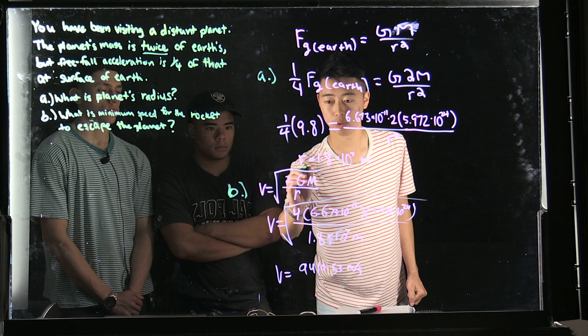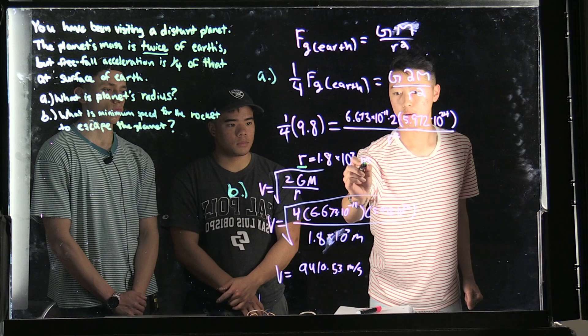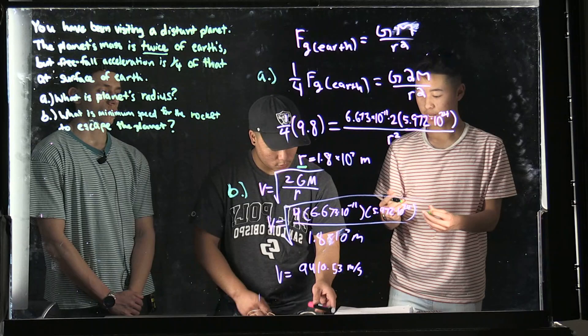Once we do all that, we find that the radius of the new planet equals 1.8 × 10⁷ meters. That's all for Part A. I'm handing it off to Tyler, who will explain Part B.